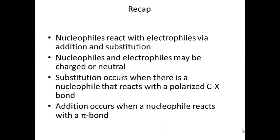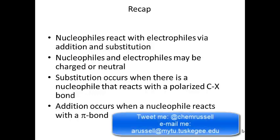Let's recap. We talked about nucleophiles and electrophiles reacting through either substitution or addition. Nucleophiles and electrophiles can be either charged or neutral — if an electrophile is charged it's positive, and if a nucleophile is charged it's negative. Substitution occurs when there's a polarized sigma bond between carbon and some electronegative atom, and addition occurs when a nucleophile reacts with a pi bond. We'll talk more about this in class with several examples. If you have any questions, email me, tweet me, call, or drop by the office.